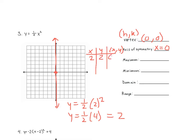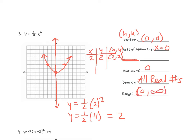So when we plug in 2, we get 2 — we go to the right 2 and up 2. Then since we're two spaces away from the axis of symmetry on the right, we need to be two spaces away on the left, and we can draw our graph. Do we have a max or a min here? A minimum. And what's our minimum? Zero. What's our domain? All real numbers. And what's our range? Zero to infinity.